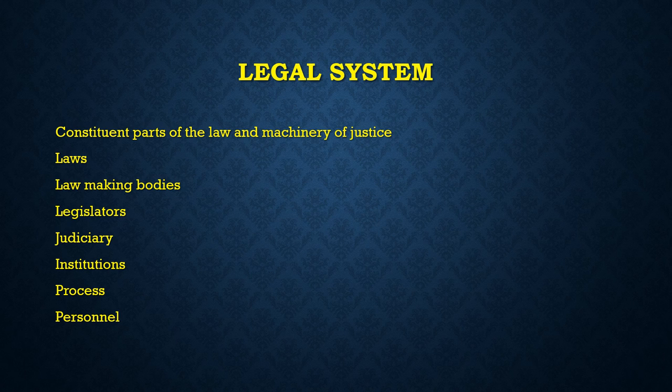Each of these needs exploring in more depth. The UK is made up of England, Wales, Scotland and Northern Ireland. However, the English legal system refers just to England and Wales. Scotland and Northern Ireland both have different legal systems.